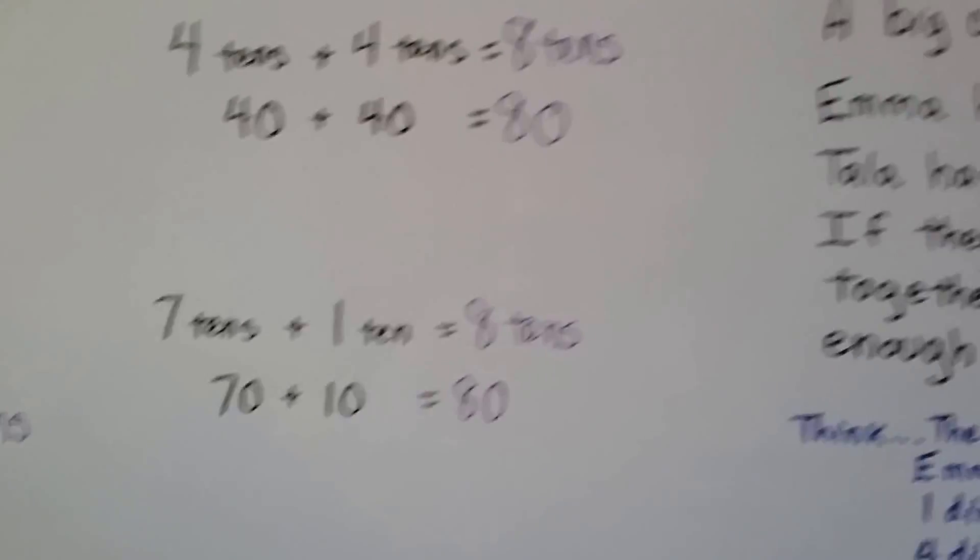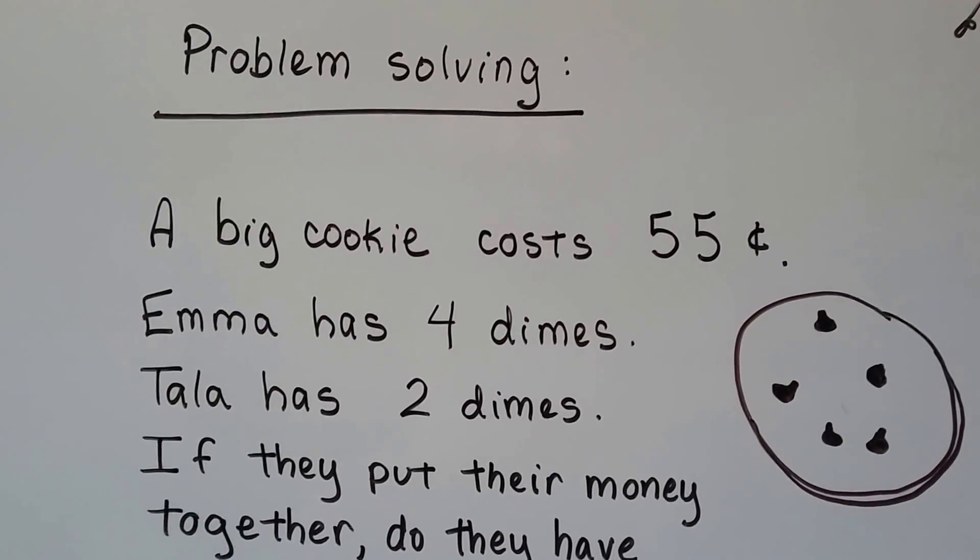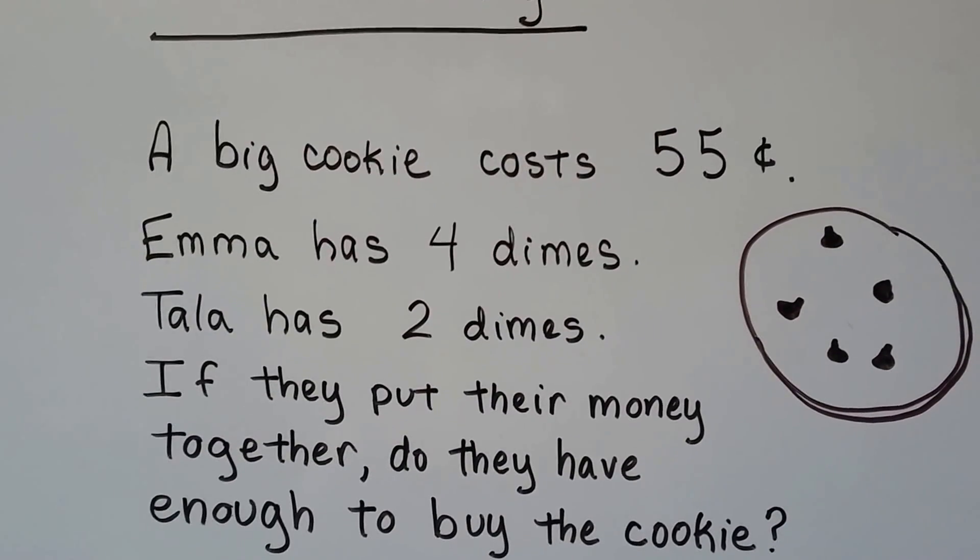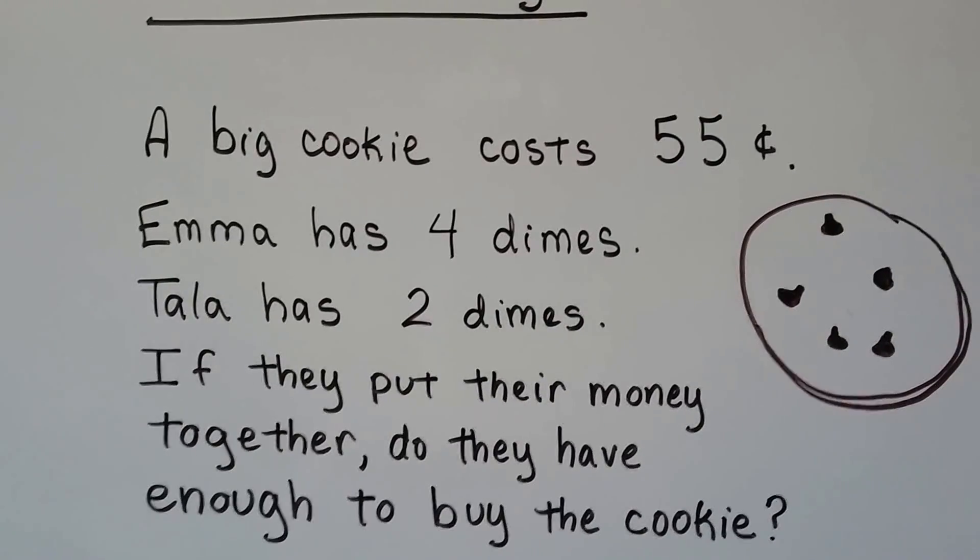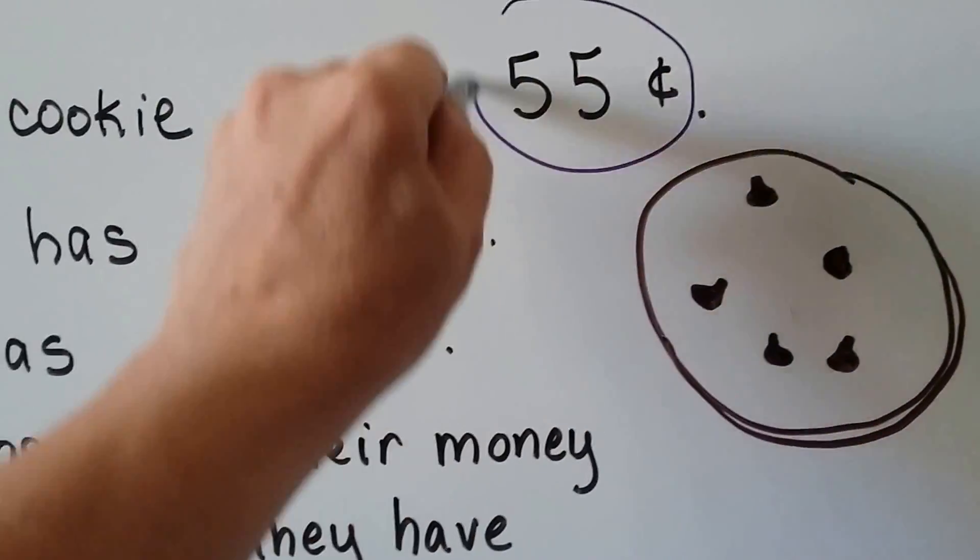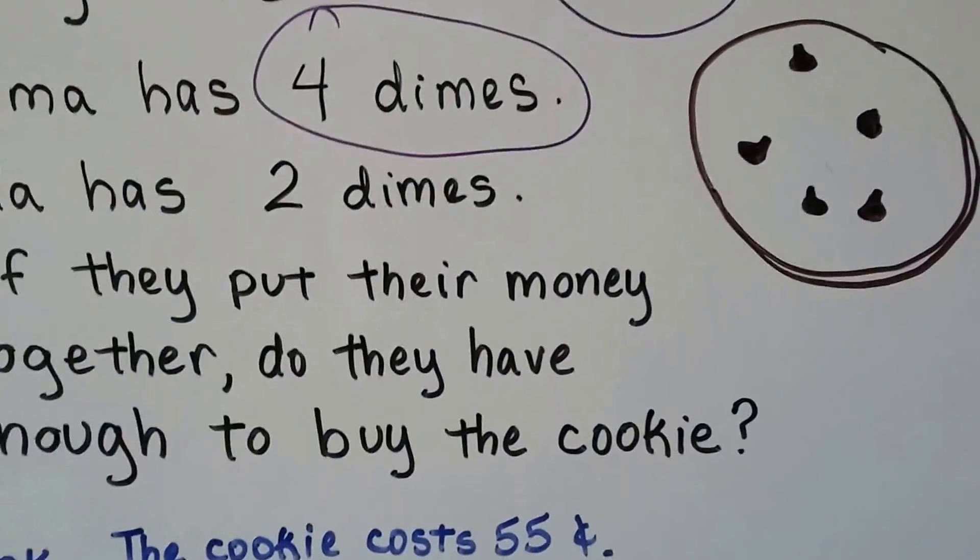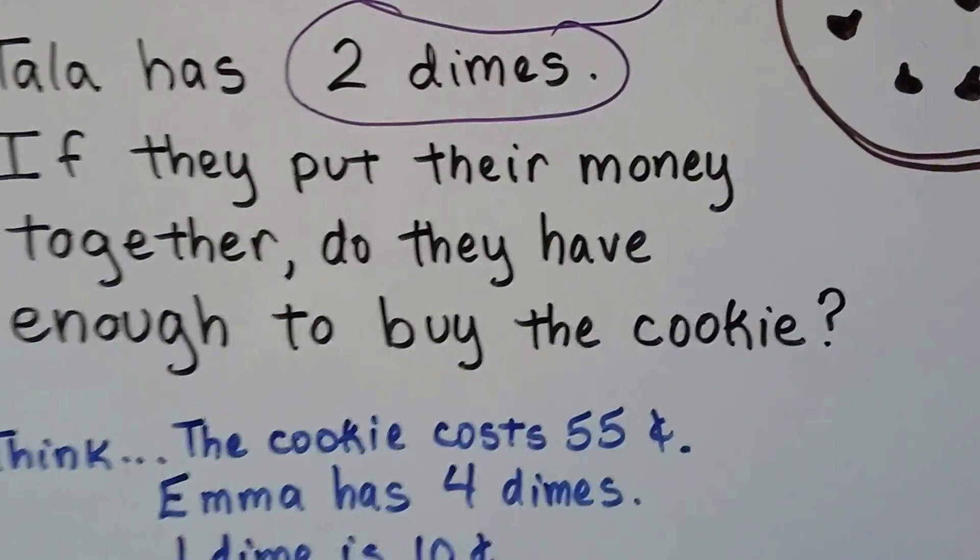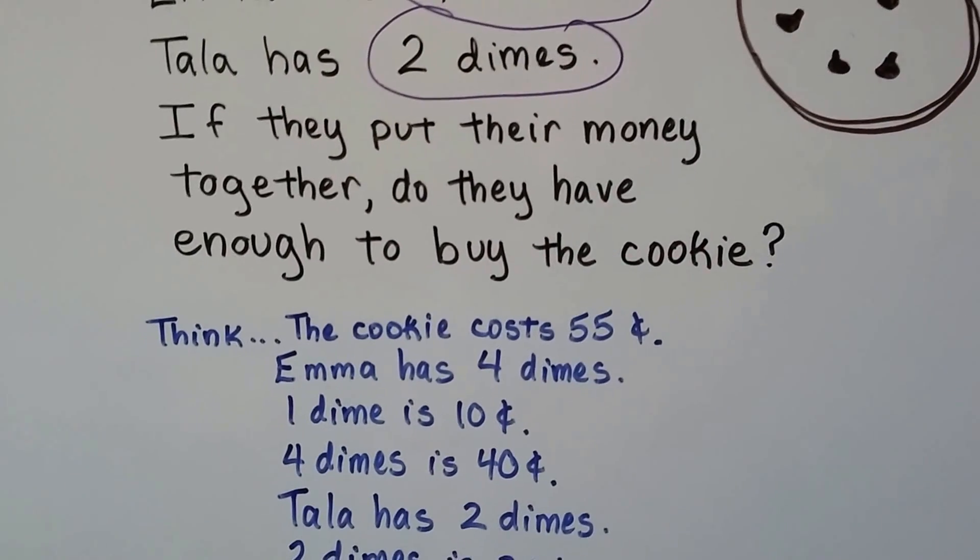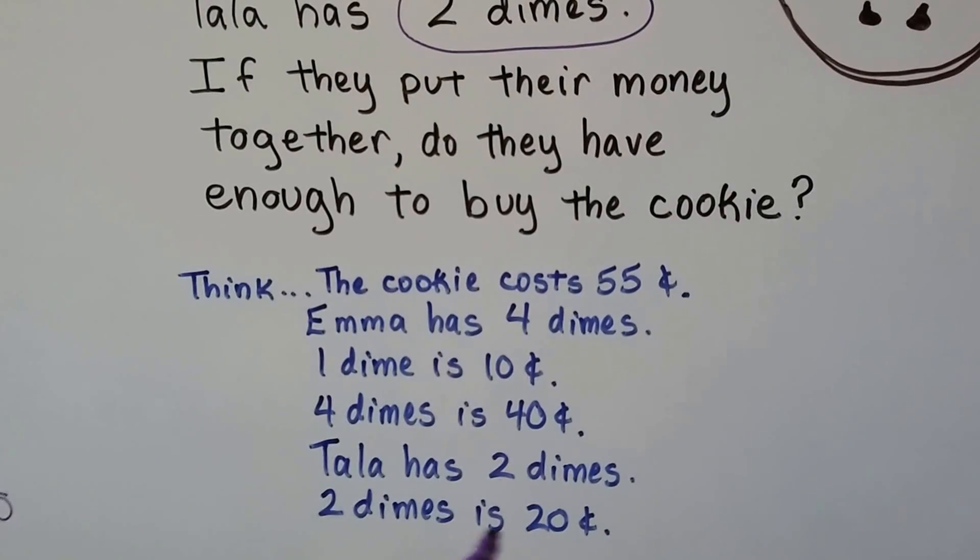Let's try a word problem. So here's some problem solving. A big cookie. See, we have a big chocolate chip cookie. A big cookie costs 55 cents, and Emma has four dimes. Tala has two dimes. If they put their money together, do they have enough to buy the cookie? And maybe they can share it, right? So we think, well, the cookie costs 55 cents, so let's circle that because that's important. Emma has four dimes. That's important. Tala has two dimes. That's important.